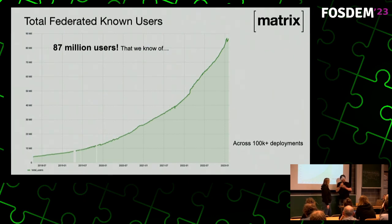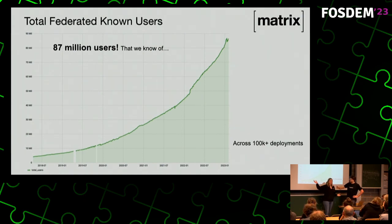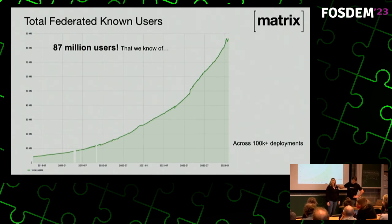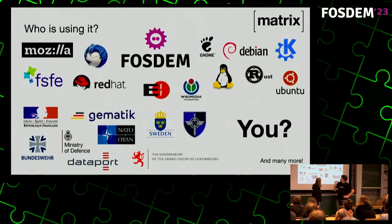Someday that number will be larger than the number of humans on the planet, which will start looking a little awkward — but they're still people you can talk to on Matrix. We also have at least 100,000 deployments that we know of, ranging from Raspberry Pis all the way up to matrix.org with 13–14 million users, with enterprise and government servers in the middle. Disclaimer: the 100K figure is based on the destinations table on matrix.org, which shows about 50,000, doubled to account for servers we can't see.